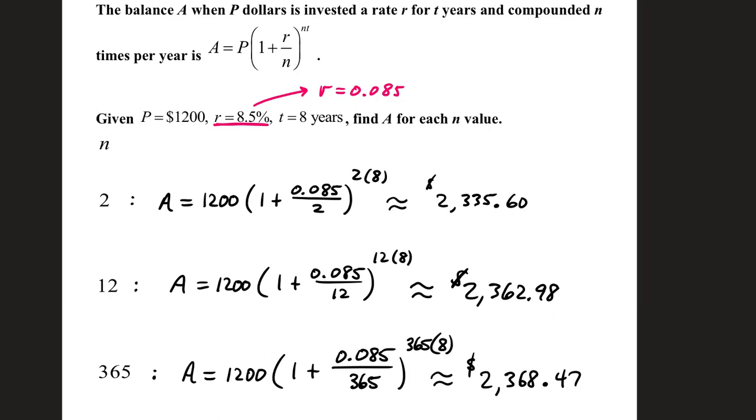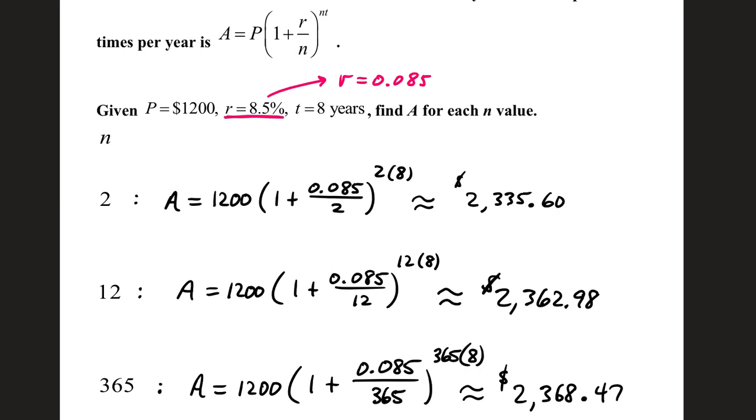Given that P equals $1200, R equals 8.5% interest in decimal form - you divide your number by 100, that's 0.085 - T is equal to 8 years. Find the value of the account, or the account balance A, for each N value.